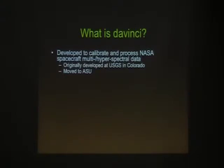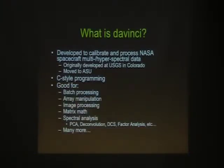DaVinci was being developed around the same time that software packages like IPL came about. DaVinci is really a C-style programming environment — it feels a lot like C when you're using it. It's a scripting interface with a C backend; you can code in C if you want, or write user-defined scripts. It's really good for batch processing, array manipulation, matrix math, spectral analysis including principal component analysis, deconvolution, decorrelation strategies, vector analysis — basically whatever you want to do, you can do it with DaVinci.